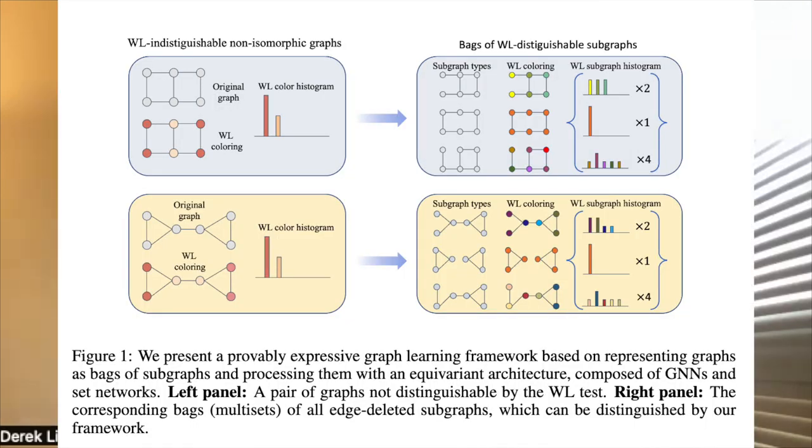Suppose you have a triangle — three nodes all connected to each other. Node 1 has neighbors 2 and 3, but from node 1's perspective, you don't know whether 2 and 3 are connected. But if you delete node 1 and look at the remaining graph: if 2 and 3 were connected, they'll still be connected with one edge remaining. If they weren't connected, you'll just have two isolated nodes. So by processing these subgraphs using message passing, you can break symmetries in the original graph that previously prevented distinction.